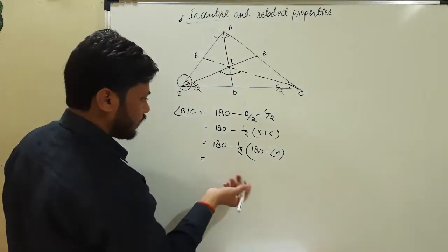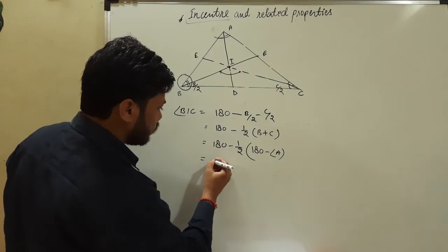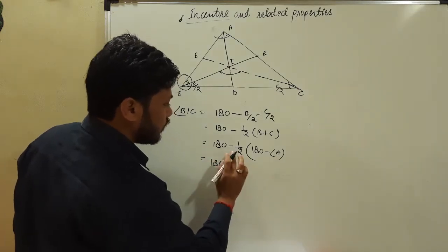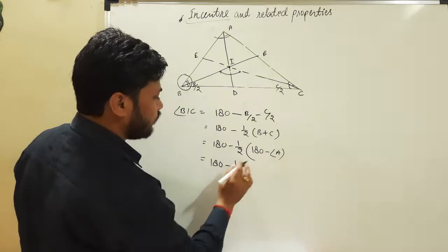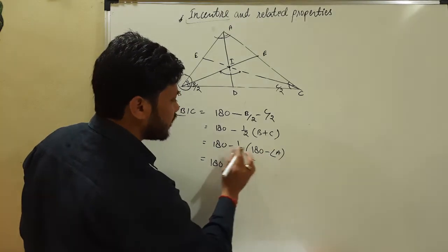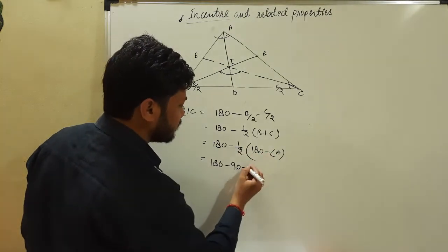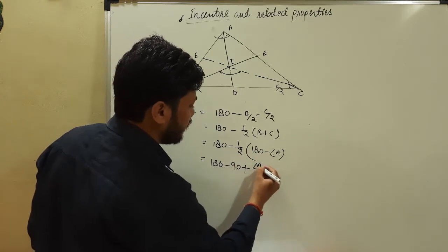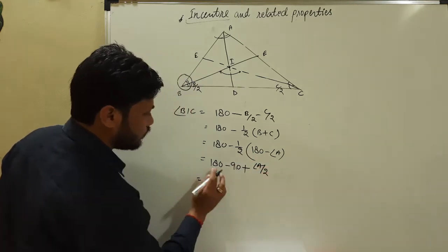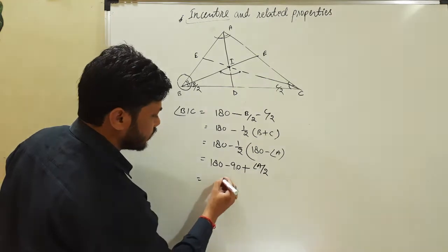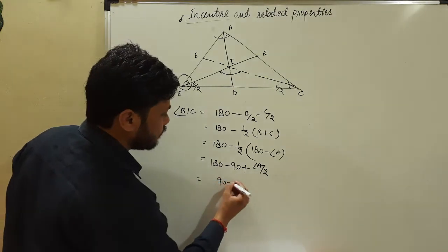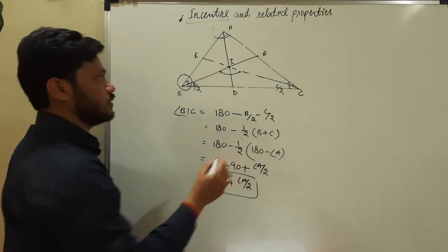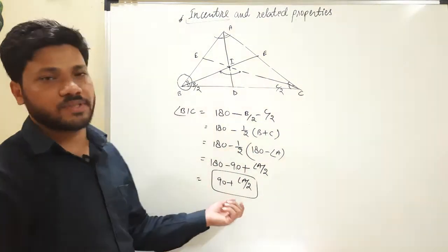This is going to be 180 minus 90 plus half of A, which gives us 90 plus angle A divided by 2. So this is the result: angle BIC equals 90 plus A by 2.